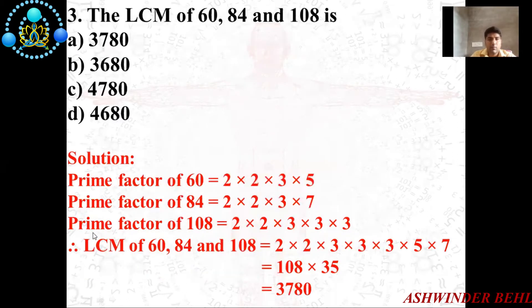Third question: The LCM of 60, 84, and 108 is? There are four options: 3780, 3680, 4780, and 4680.